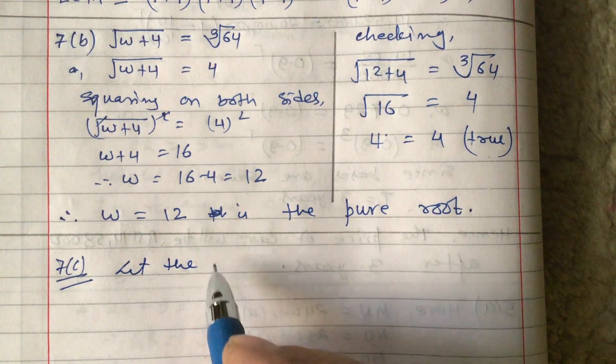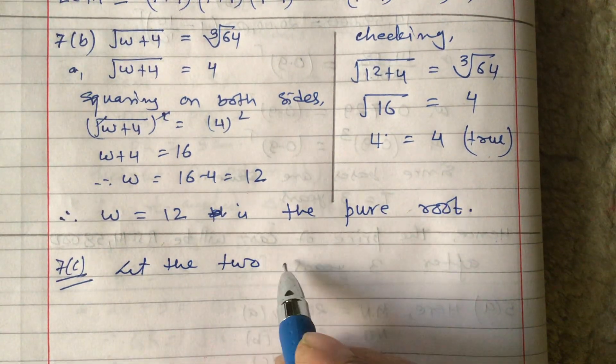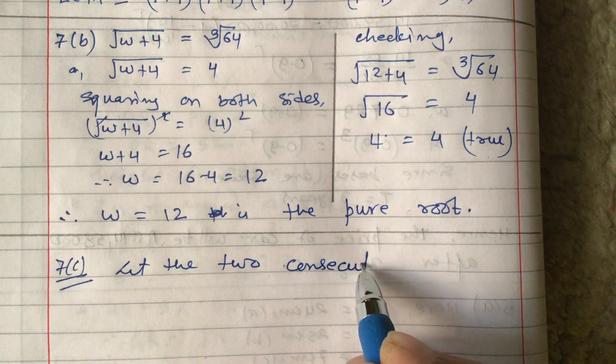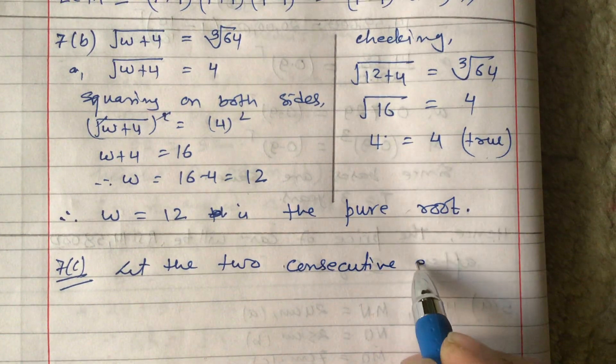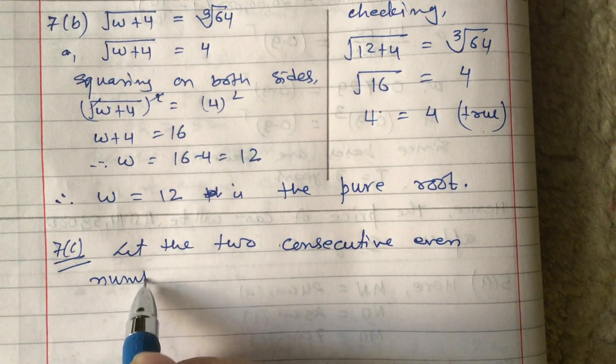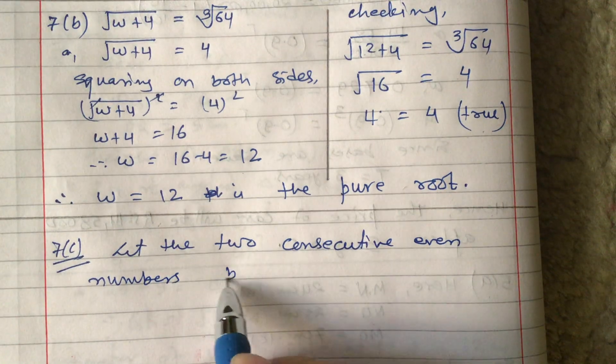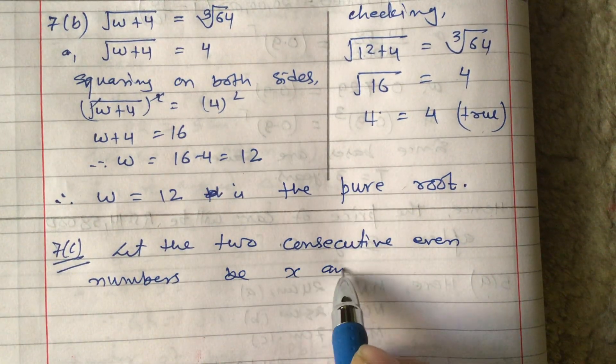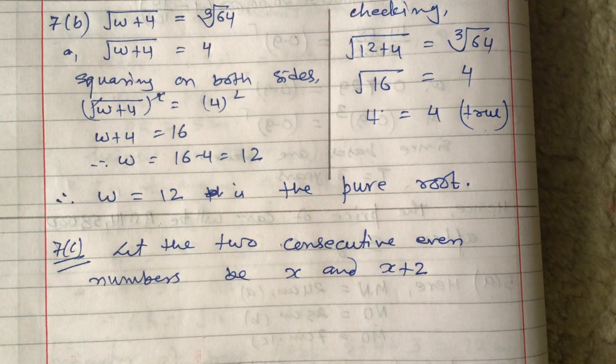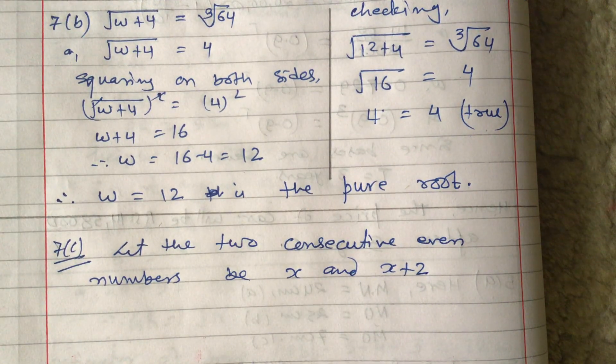Let the two consecutive even numbers be x and x+2, because between two consecutive even numbers there is a difference of two.